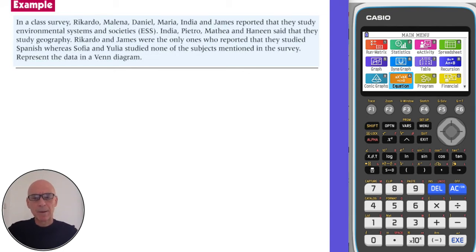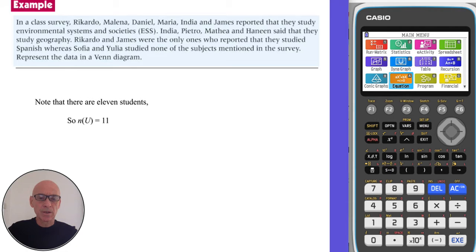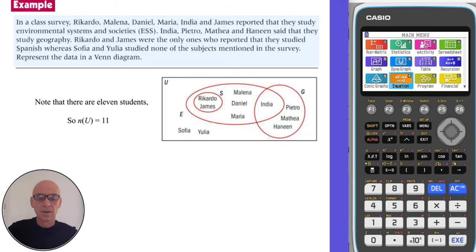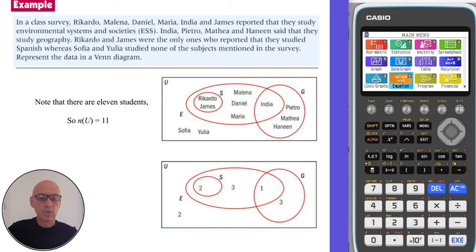In this question we're asked to represent the given data in a Venn diagram. First, let's find how much data there is by adding the names of the students — there are 11 students, so our rectangle should contain 11 names. The events are: studying Environmental Systems and Societies, studying Geography, and studying Spanish, so we need three ovals. A completed rectangle looks like this, and replacing names with numbers of students gives our final Venn diagram.